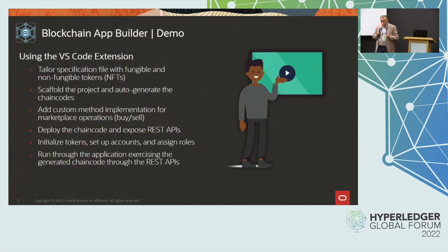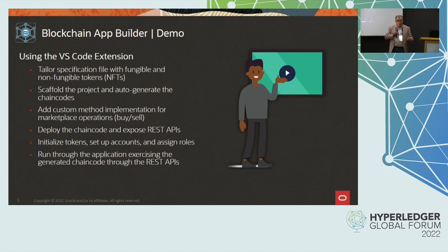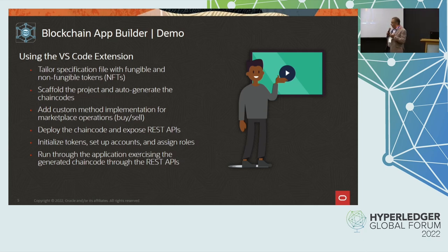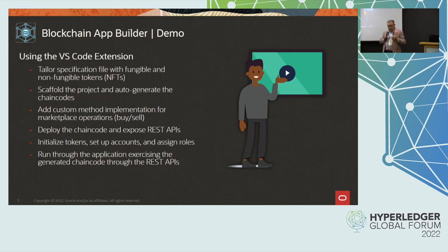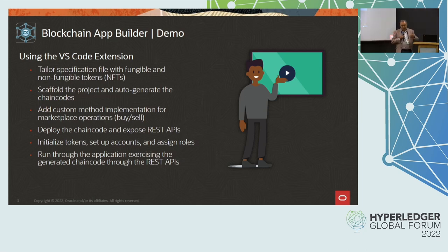What you're going to see in the demo is a Visual Studio Code extension version of the Blockchain App Builder. We also have a command line version for CI/CD integration and power users, but most people would use the GUI. In there, we'll tailor the specification file for fungible and non-fungible tokens, automatically scaffold the project, generate the chain code, and extend it with custom methods for marketplace operations — a bit of an NFT marketplace in the demo. Then we deploy it, expose REST APIs, go through a one-time setup to initialize the token system, set up accounts and roles, and run through the actual transactions: minting, issuing NFTs, buying and selling for fiat payments as well as tokens through those REST APIs.